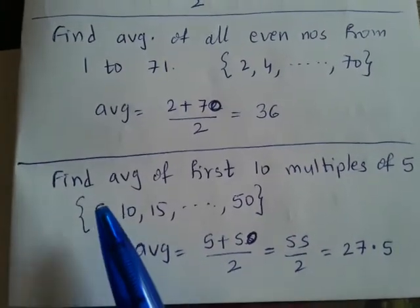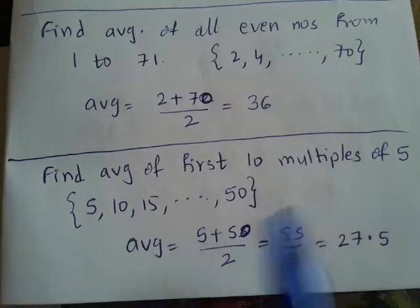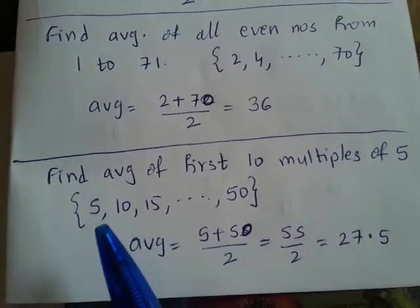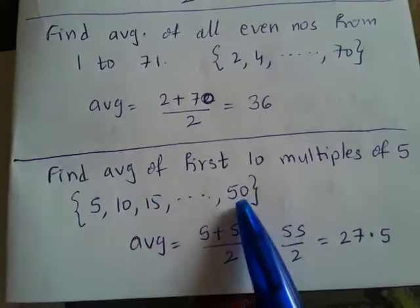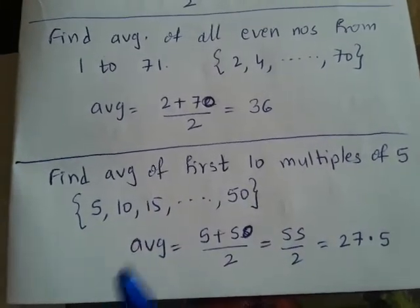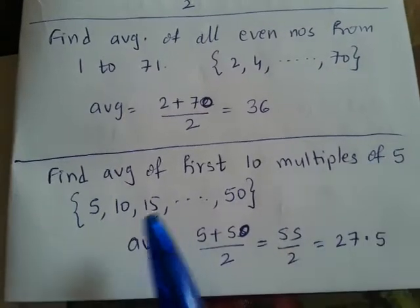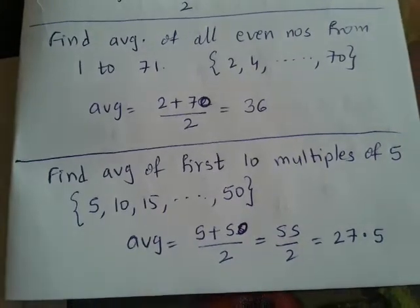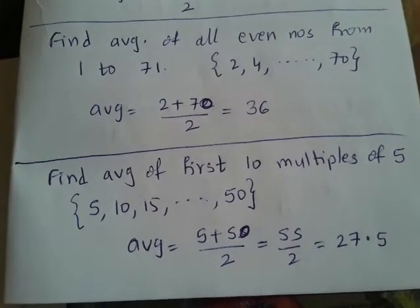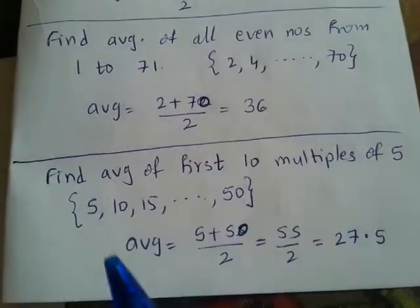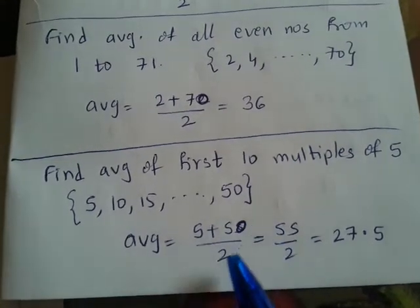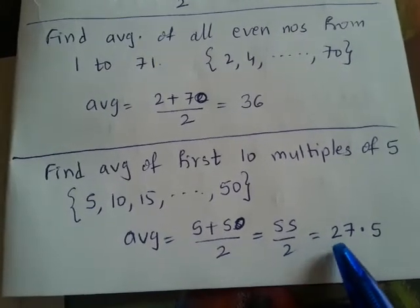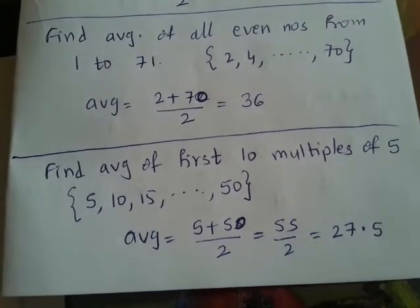Find the average of the first 10 multiples of 5. We begin with 5 — so 5, 10, 15 — and the 10th multiple is 50. Since these are multiples of 5, the common difference between all of them is 5, so they are equidistant. That means we can apply the same formula: (first number + last number) divided by 2. So (5 + 50) divided by 2 comes out to 27.5.